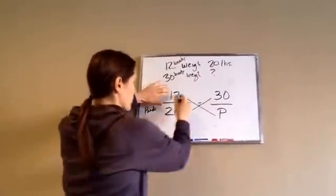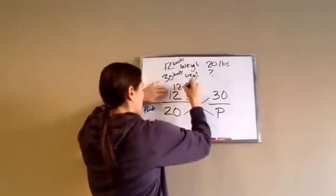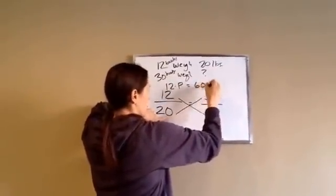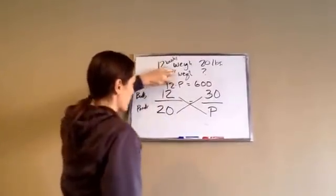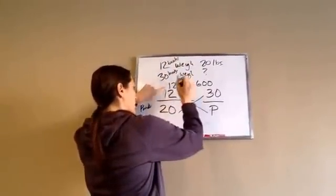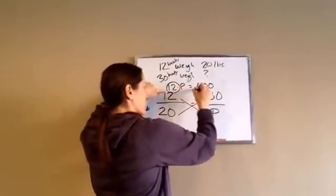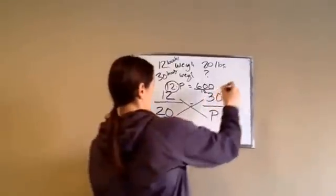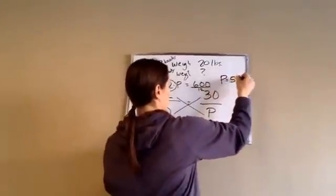So you're going to go 12 times P, which is 12 times P, 30 times 20, which is 600. And then 12 times what equals 600? Well, since we're trying to get the P by itself, we're going to take times 12, divide by 12, and we end up getting 50. So P equals 50.